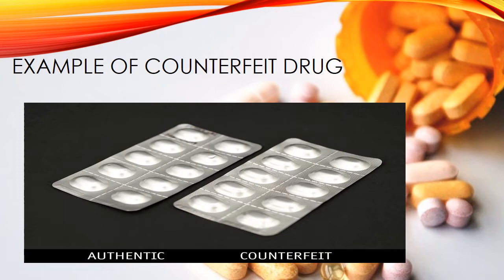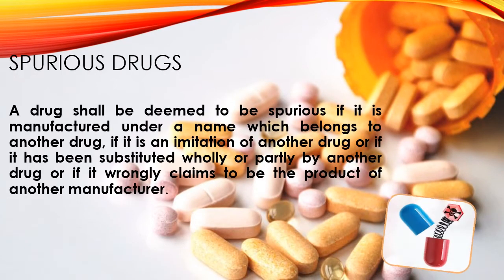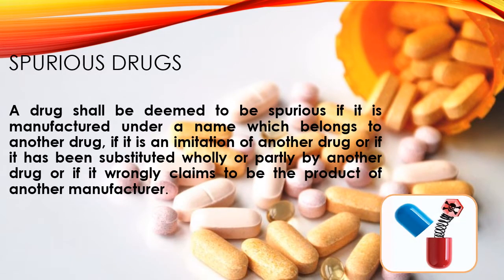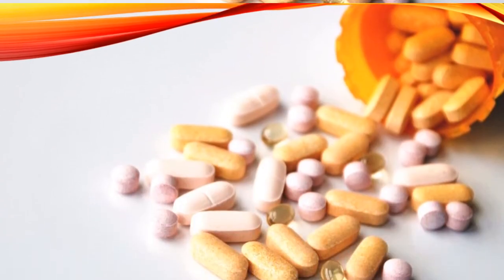Now moving towards our second term — spurious drugs. Spurious drugs are those drugs that are manufactured under a name which belongs to another drug, or if it is an imitation of another drug, or if it has been substituted wholly or partly by another drug, or if the drug claims to contain an active pharmaceutical ingredient but actually doesn't, or if it wrongly claims to be the product of another manufacturer.